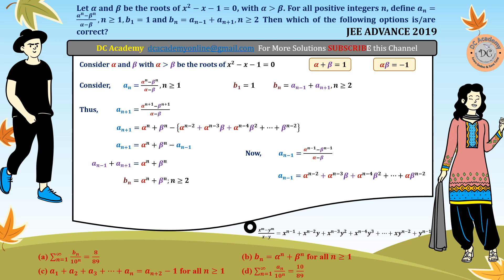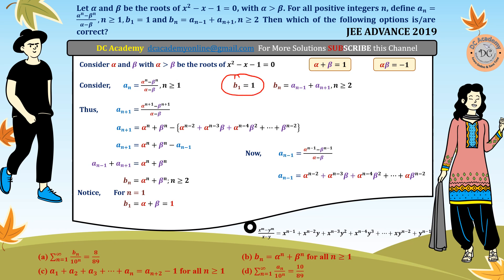Now consider option B, which claims the relation holds for all n greater than or equal to 1. Testing n equal to 1: b₁ equals alpha plus beta, which equals 1. This satisfies the initial conditions, so we can say bₙ equals alpha to the power n plus beta to the power n is true for n greater than or equal to 1. Hence option B is correct.